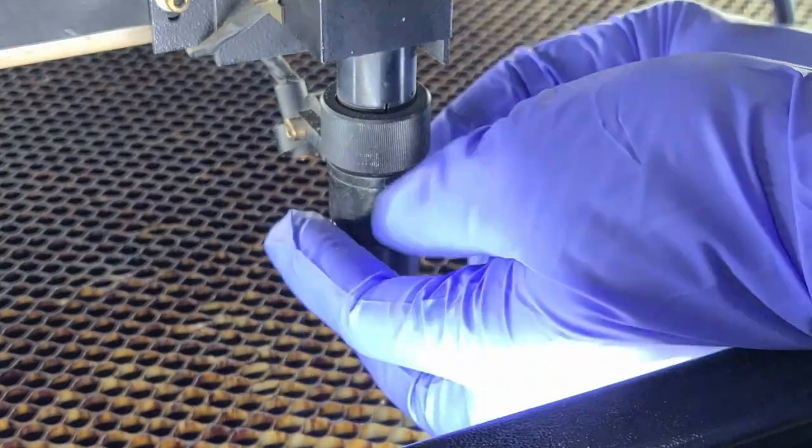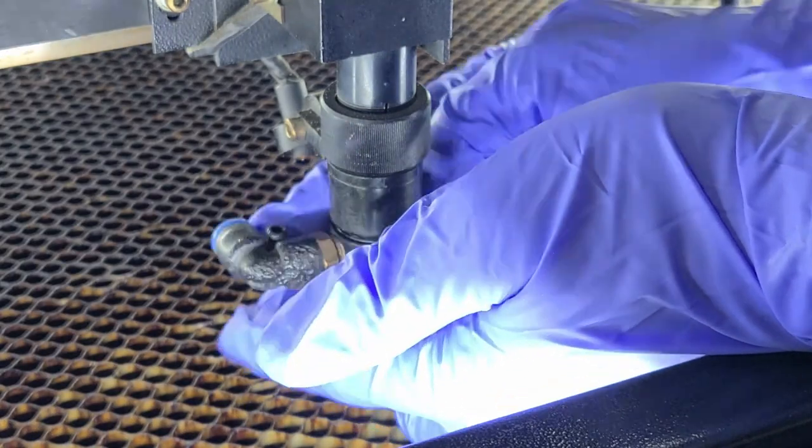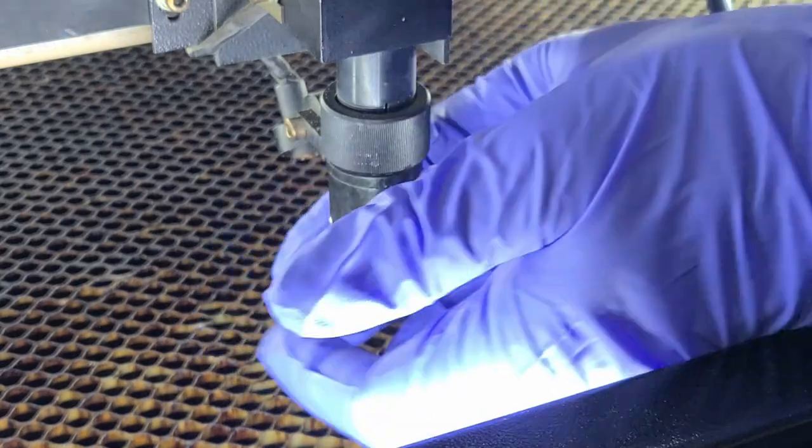Before placing it back onto the end of the focal tube, I like to make sure that everything is clean. I'll take the camera and look up into the focal tube to make sure that everything looks good. Once you're satisfied that everything is clean, go ahead and replace the nozzle back onto the focal tube.